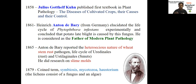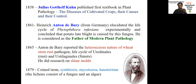The Vriksha Ayurveda is the first book of plant disease in India. But worldwide, the first textbook in plant pathology is 'The Disease of Cultivated Crops, Their Causes and Their Control,' written by the scientist J.G. Kühn. Most exams ask this question — what is the first textbook in plant pathology — so this is important to remember.